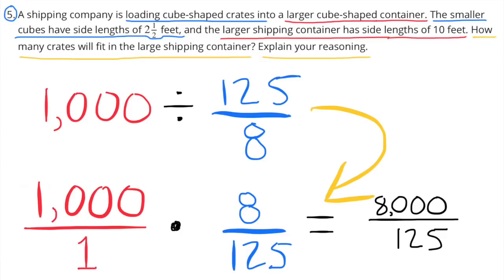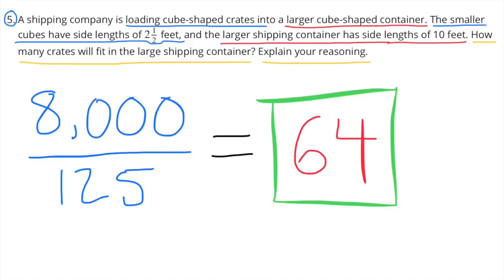To figure out how many smaller shipping containers fit inside the larger one, we divide 1,000 by 125/8. We multiply by the reciprocal: 1,000 times 8/125. One thousand times eight equals eight thousand, and one times 125 equals 125. Eight thousand divided by 125 equals 64. We could fit sixty-four of the smaller shipping containers inside the larger shipping container.